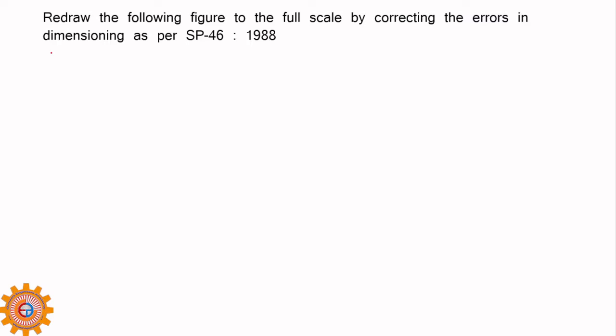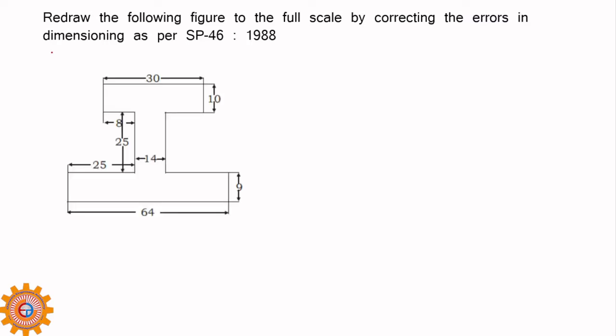Redraw the following figure to full scale by correcting the errors in dimensioning as per SP46-1988. The given figure is an I-section, which is generally symmetric about the x-axis or y-axis, but that is not the case here. I have drawn it to full scale, keeping the distance 30, bottom flange 64, and web 25.